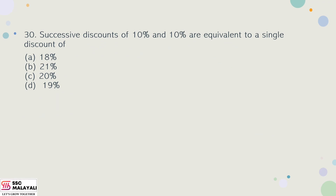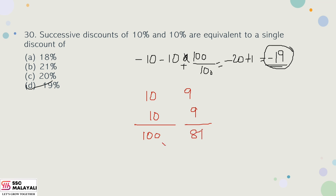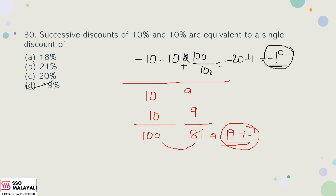30th question: Successive discounts of 10% and 10% are equivalent to a single discount. Using the formula: combined discount = 10 + 10 − (10×10)/100 = 19%. Alternatively, on a price of 100, after two 10% discounts: 100 → 90 → 81, so the single equivalent discount is 19%. Option D is the correct answer.